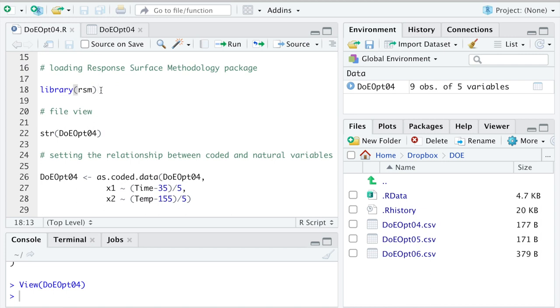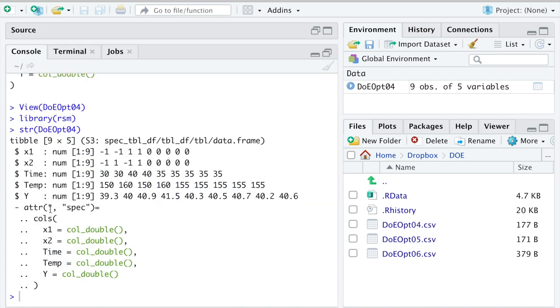First, we need to load the rsm library. Let's now run the str function to check the file structure. We can see that all the variables are numeric, so we are good to go ahead with the analysis.